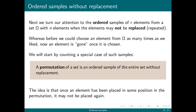We're going to start by counting a special case: instead of only taking R elements from the set, we take the entire set and put it in order. That is called a permutation of the set — an ordered sample of the entire set without replacement. If you're ordering something, you're not going to put the same element in twice. A student can't be both in the second and 14th slot. So a permutation is an ordered sample without replacement of the entire set.